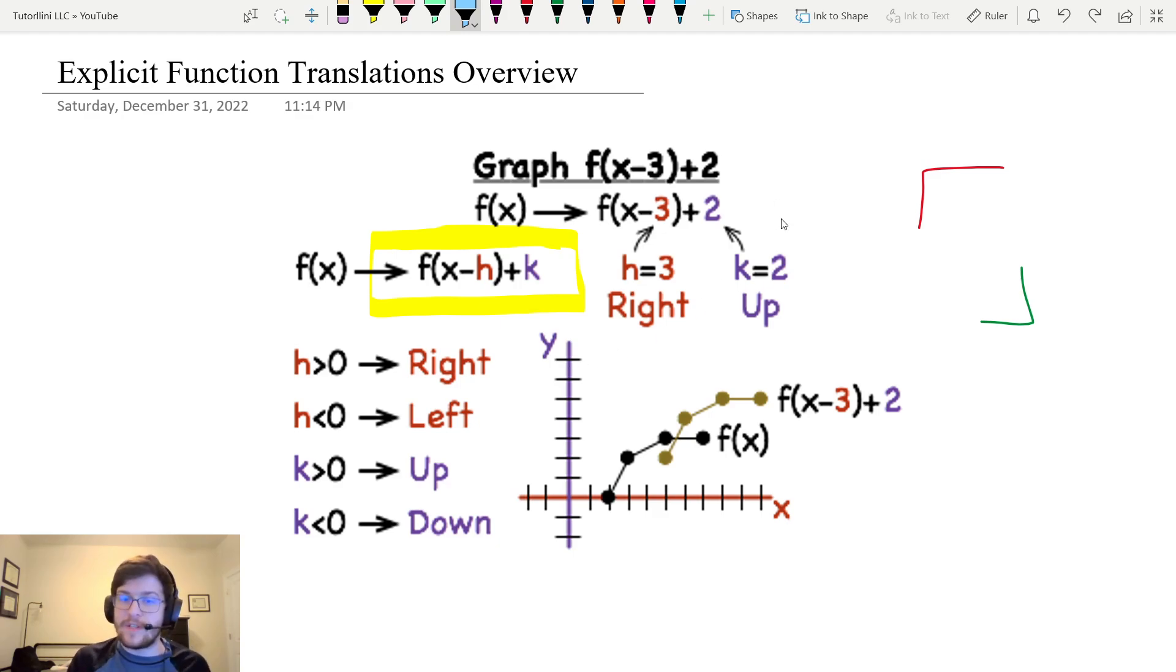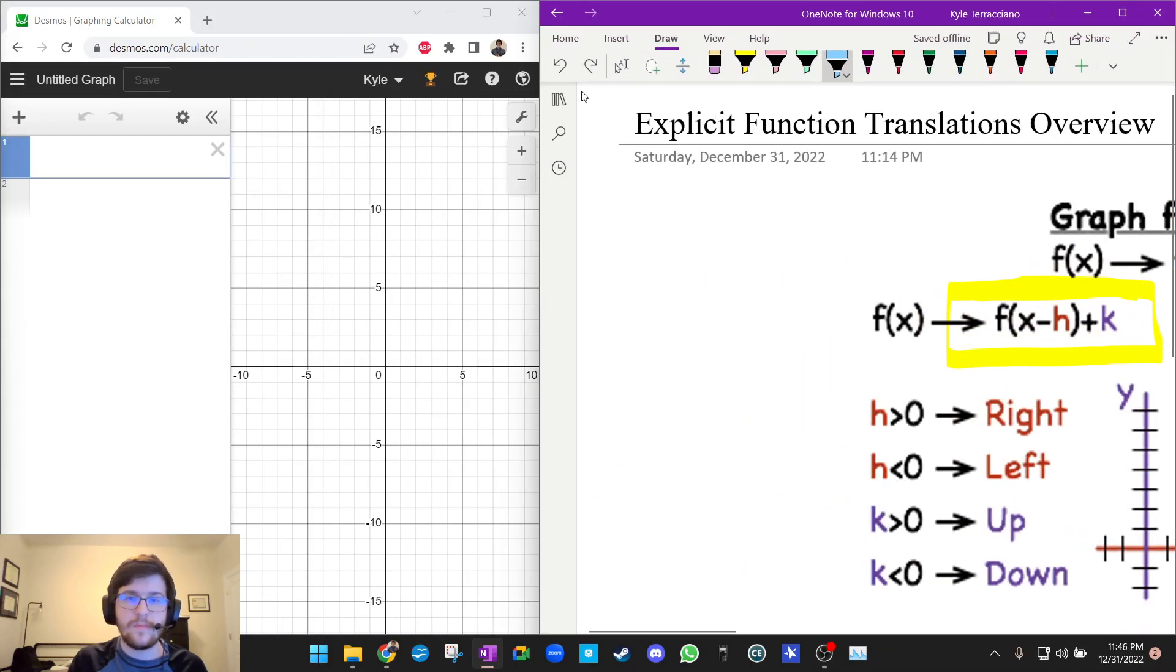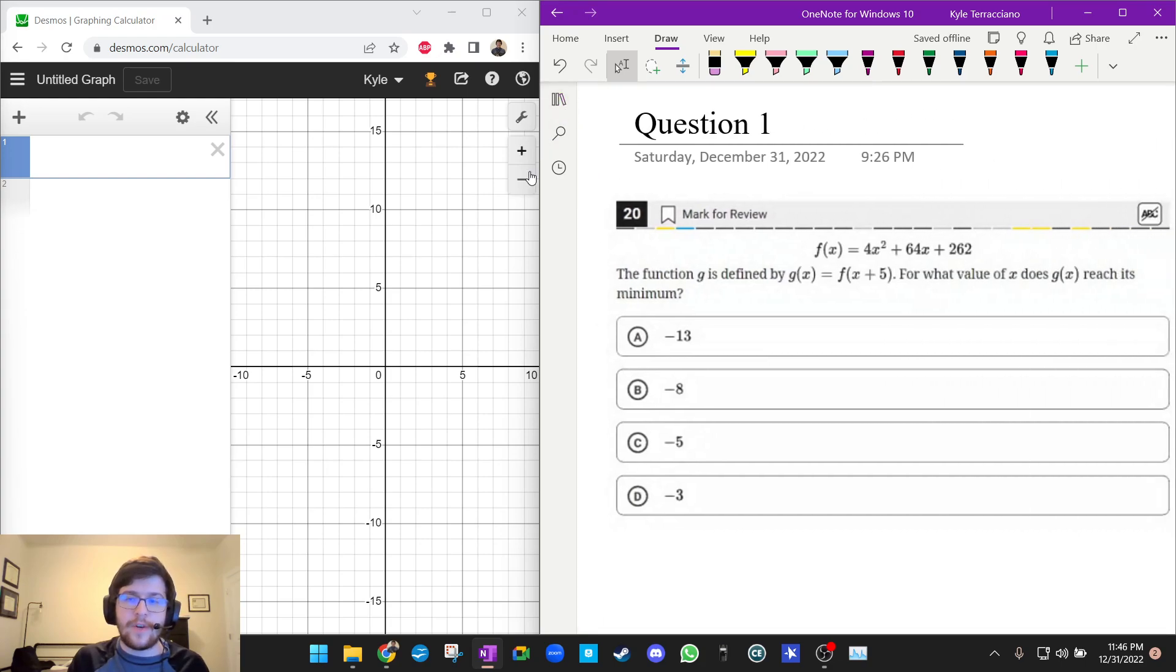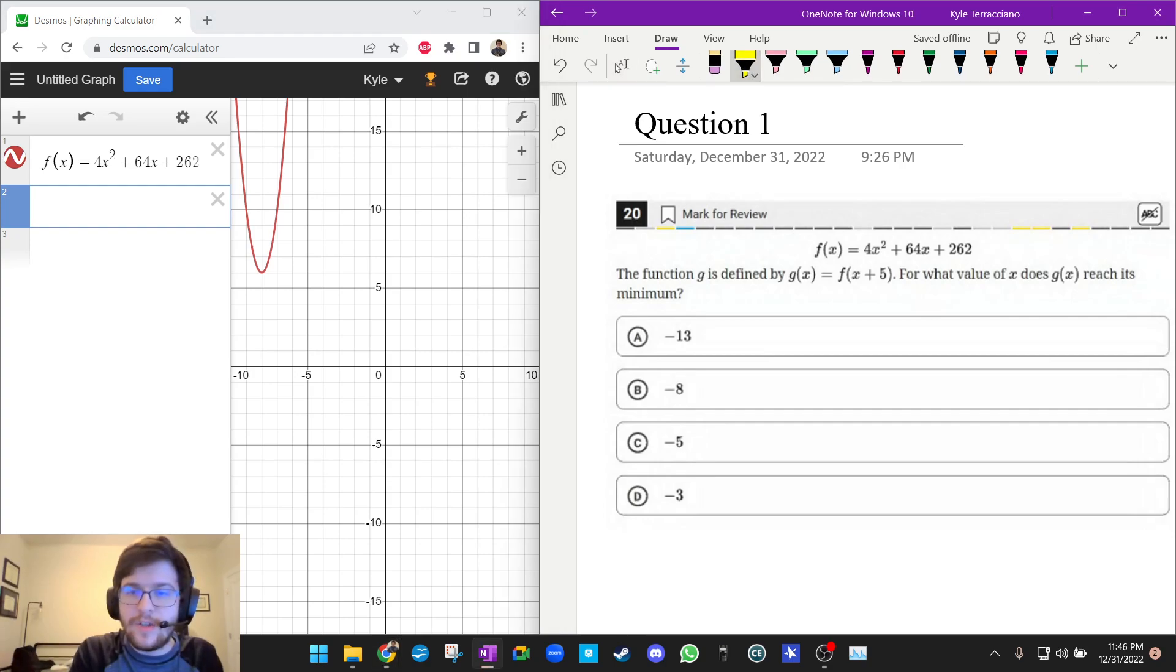So let's go over some questions and see how we can use Desmos to do at least most of the work on these types of questions for us. Okay, question one. So I'm first going to type in f(x) = 4x² + 64x + 262. So that is my f(x). And now the question tells me g(x) = f(x+5). Okay, so I'm going to type that into my second line on Desmos.